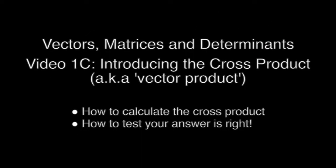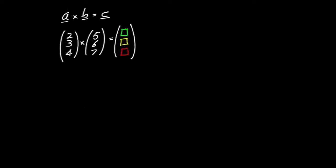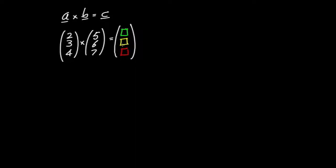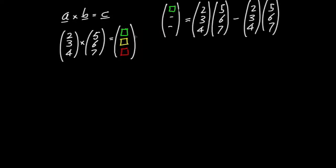In this video we're going to see how to calculate the cross product of two vectors, also called the vector product because the output is a new vector. We'll also see how to test that the answer is correct. Here, a cross b equals c, using the familiar multiplication symbol. Vector a is 2, 3, 4 and vector b is 4, 5, 6. We're going to find the cross product c. Because it's a vector, we'll need to work out each of the three components.